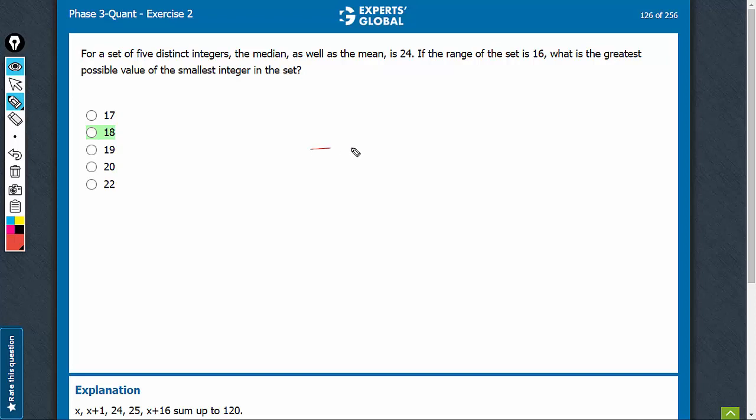The median as well as the mean is 24. For 5 terms, the median value is 24. Greatest possible value of the smallest integer.